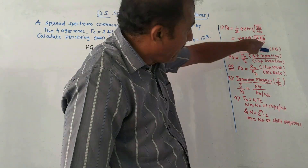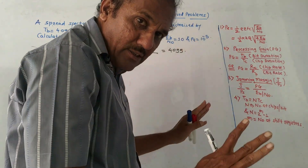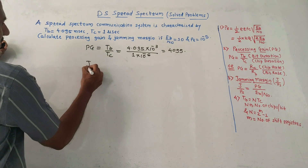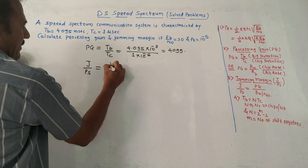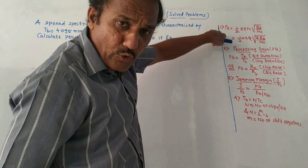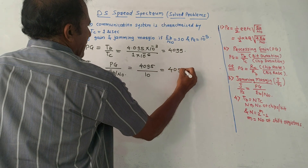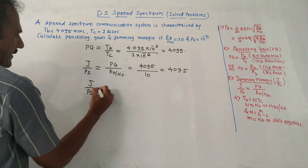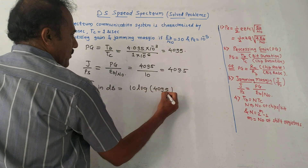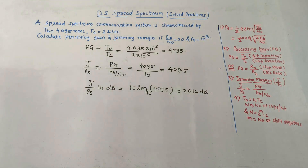Now like the last numerical, EB by N0 was derived from PE. In this numerical, the probability of error value is given, but you don't need to use that formula here. Make it simple. To calculate jamming margin J by PS, we have the direct formula PG upon EB by N0. The value of EB by N0 is given in the question, so directly put the values: 4095 upon 10 equals 409.5. Jamming margin in dB is 10 log of 409.5, which gives 26.12 dB. This is the answer for jamming margin.